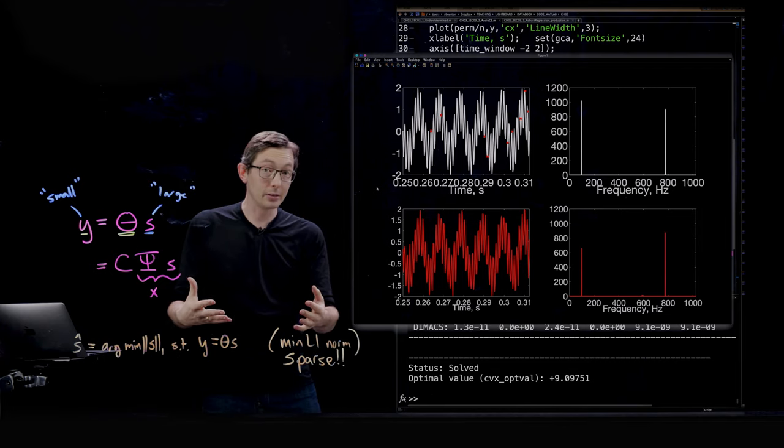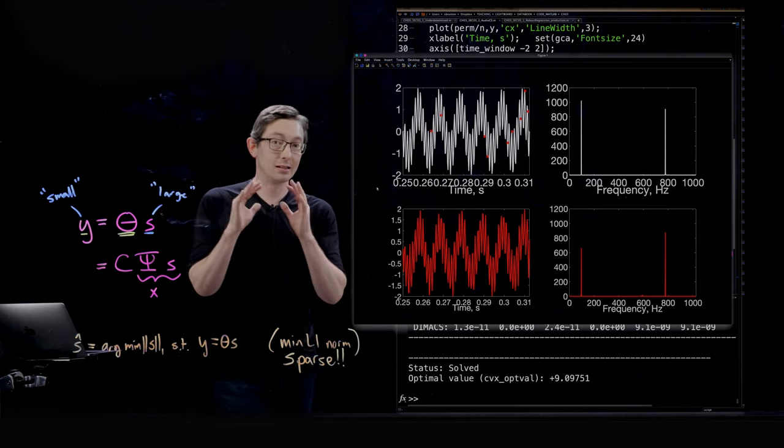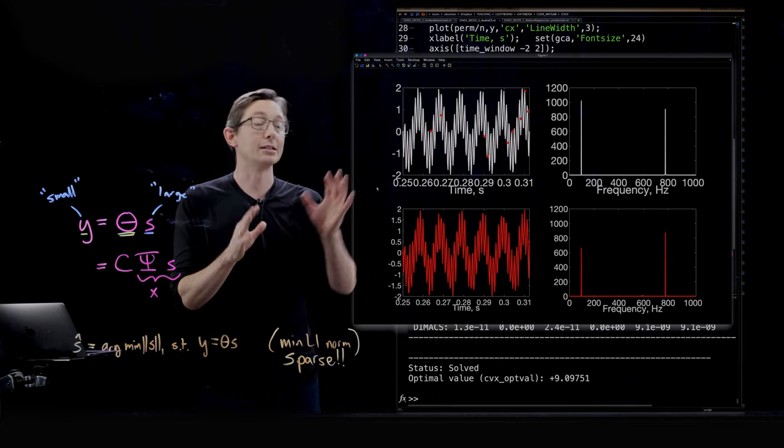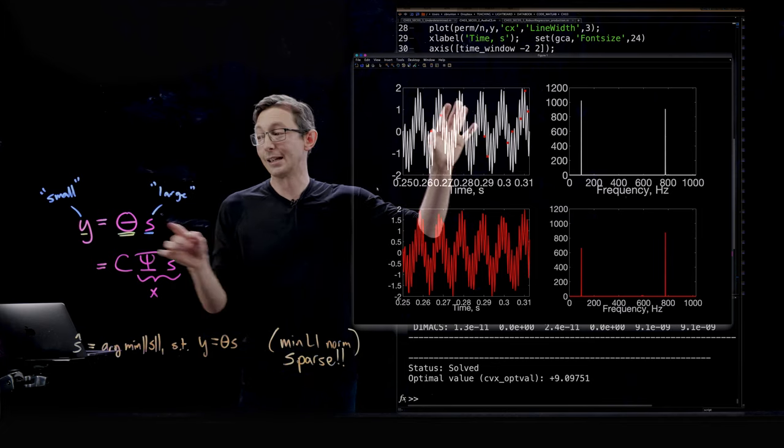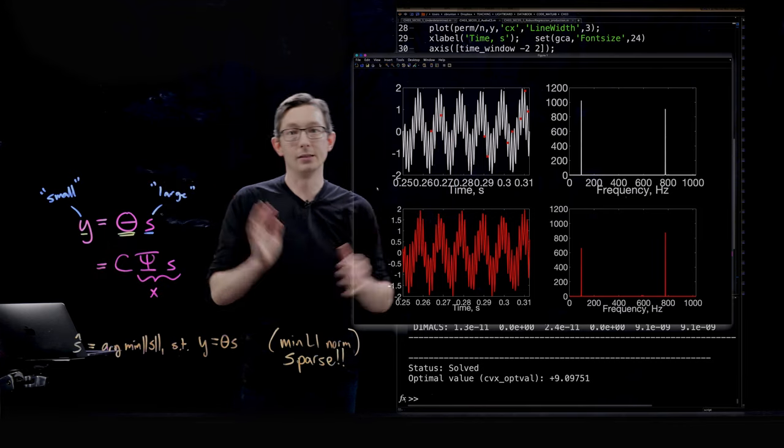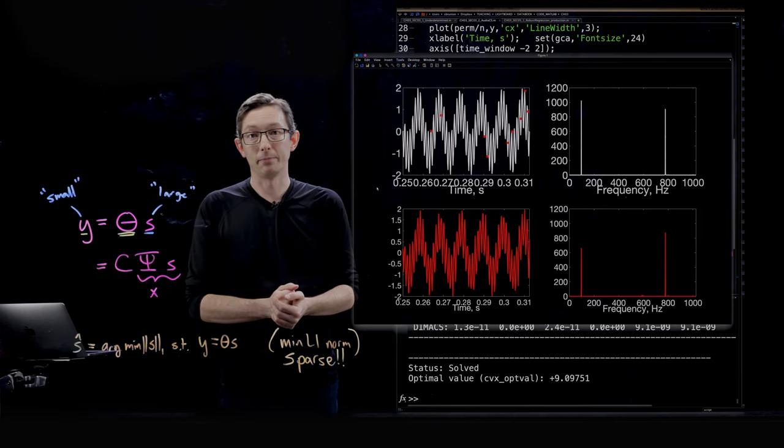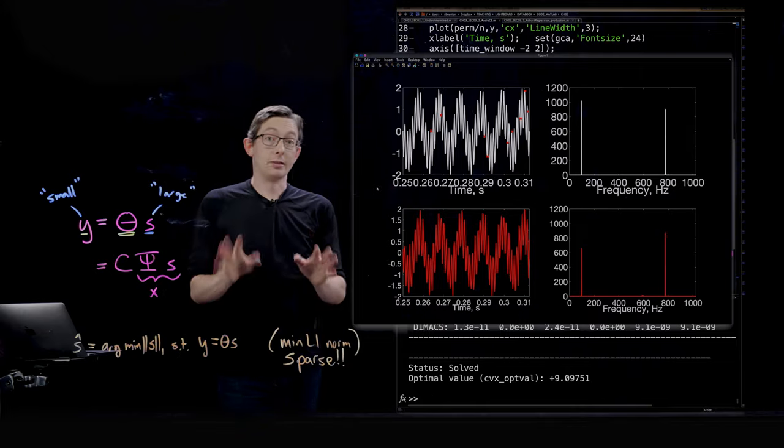So that's a really really cool example of how you can beat the Shannon Nyquist sampling rate using compressed sensing if your measurements are random and you use this L1 minimization. Alright thank you.